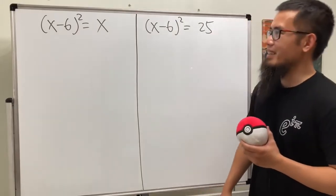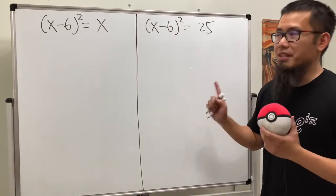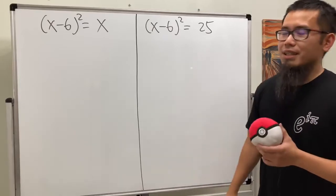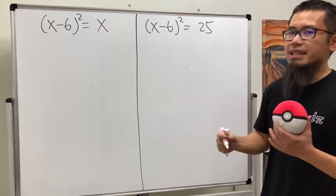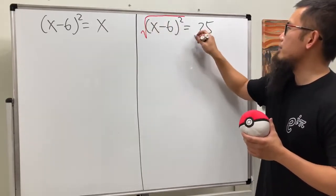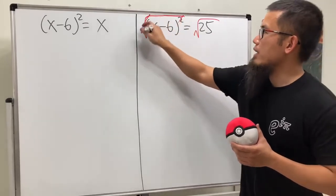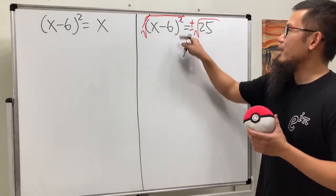Okay, let's go ahead and do this one first, because this right here is definitely easier. Why? Because we have a perfect square on the left-hand side already, and on the right-hand side, it's just a number. So, we can just go ahead and take the square roots on both sides. This and that will cancel, and don't forget the plus or minus. That's pretty much the idea, right?